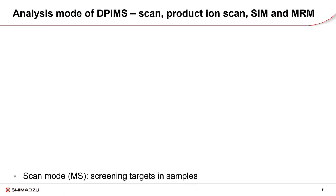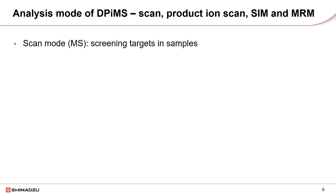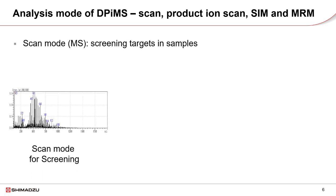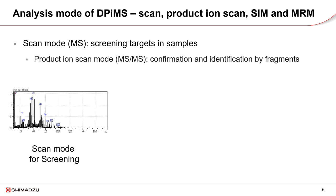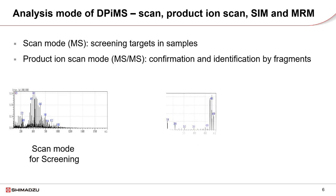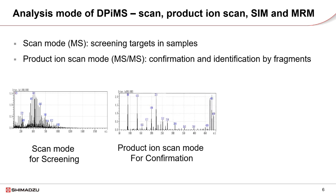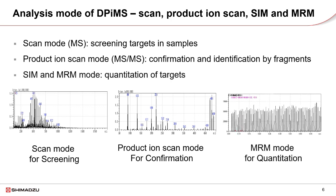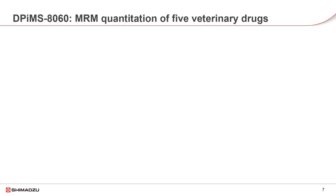The analysis modes of DPI-MS include scan mode, product ion scan mode, SIM mode, and MRM mode, depending on the analysis purpose. Scan and product ion scan methods are used for detection, confirmation, and identification of compounds, while SIM and MRM methods are used for quantitation.